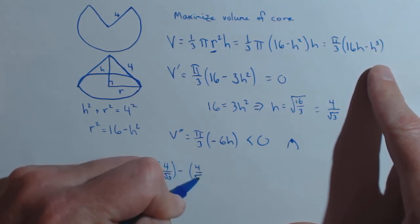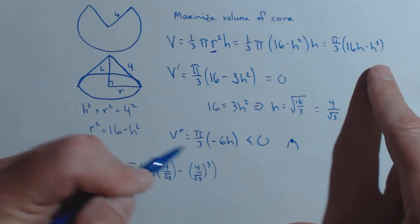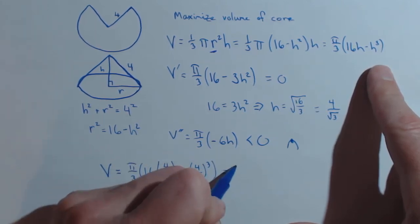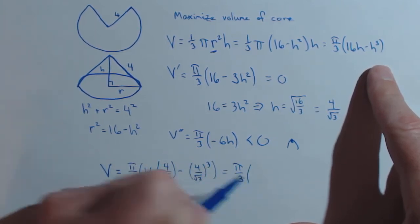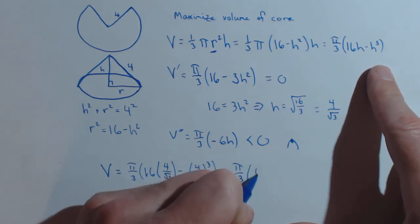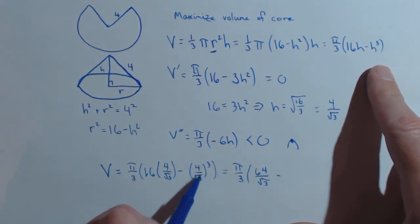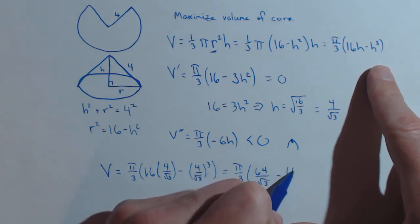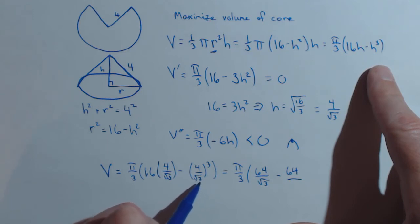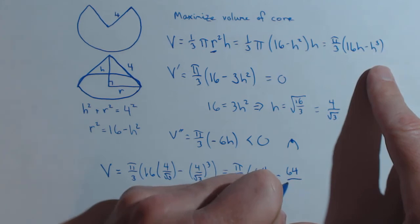minus 4 over rad 3 cubed. And we'll simplify this a little bit. So we have pi over 3. We have 64 over rad 3 here. Now these are both getting cubed. 4 cubed is also 64. But this is rad 3 times rad 3 times rad 3. Well, rad 3 times rad 3 is 3, times another rad 3. So we have 3 rad 3.